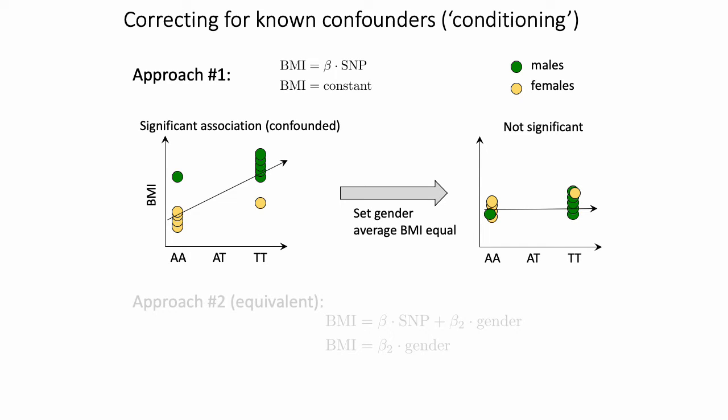One of the biggest challenges people discovered when they first started doing these association studies is that there are lots of confounding variables. A confounding variable is informally some variable that can explain your association between SNP and phenotype, essentially taking away the explanatory power of your SNP.